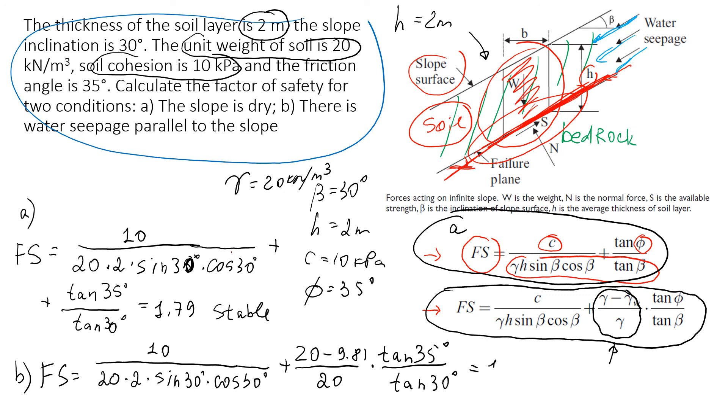This should give us about 1.19. You will see that the safety factor decreased when we assumed seepage parallel to the slope. It became 1.19, but still it's greater than one, so in this case we assume that the slope is stable. Thanks for watching this video. I hope you learned how to do slope stability analysis of infinite slope. Have a nice day and bye.